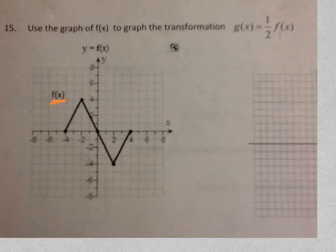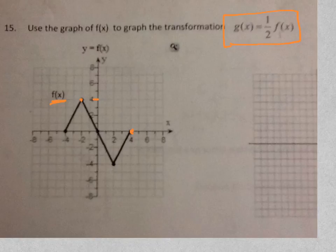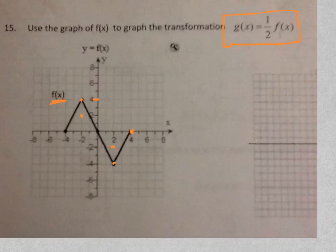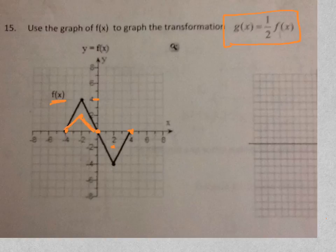Let's try another problem. This says: use the graph of f of x — this is f of x right here — to graph the transformation g of x equals one half f of x. For every f of x value, g of x is going to take half of that. This point right here is 4, so what's g of x going to be? Half of 4 is 2. This one is negative 4, so g of x is going to be negative 2. What isn't changed? Taking half of 0 doesn't change anything, so these zeros are still here.